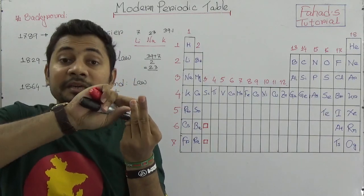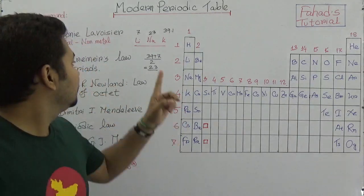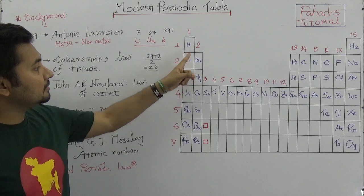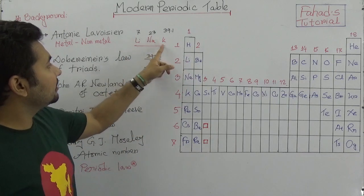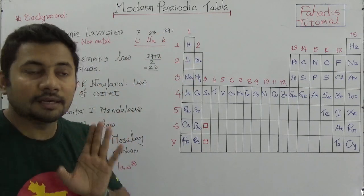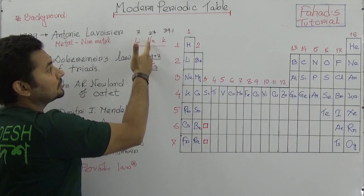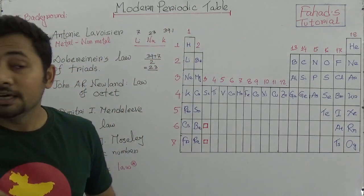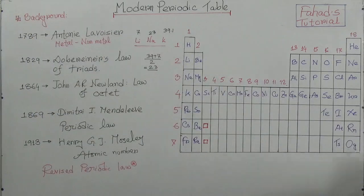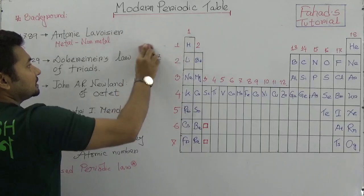And 23 is exactly the atomic mass of sodium. So this is the Law of Triads: if elements are arranged according to their mass and we take any three elements, the mean atomic mass of the first and third elements would be equal to the atomic mass of the second element. Lithium is 7, potassium is 39.1, and when arranged, we get sodium as 23. That is the Law of Triads.